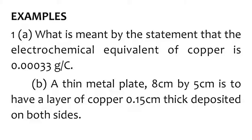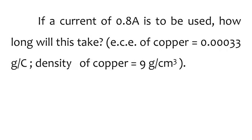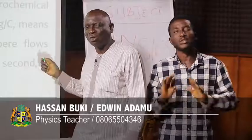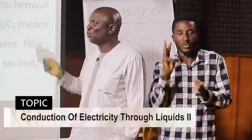Question 1A: What is meant by the statement that the electrochemical equivalent of copper is 0.00033 grams per coulomb? Part B: A thin metal plate, 8 cm by 5 cm, is to have a layer of copper 0.15 cm thick deposited on both sides. If a current of 0.8 ampere is to be used, how long will it take? ECE of copper is 0.00033 grams per coulomb; density of copper equals 9 grams per cm³. The question asks for time.